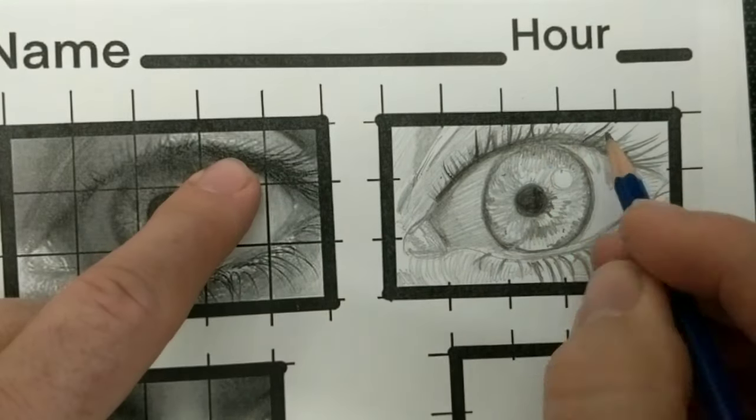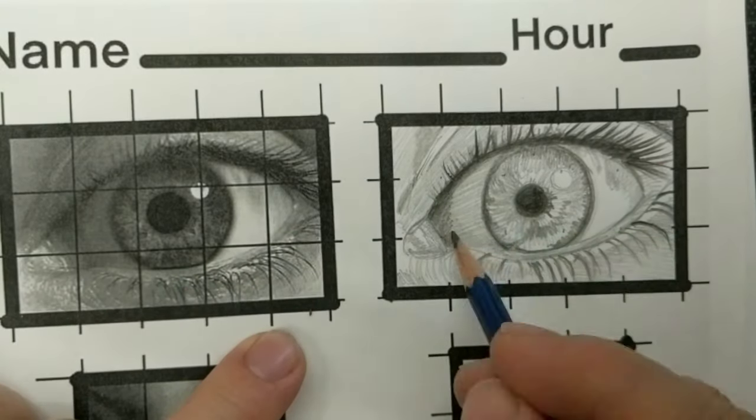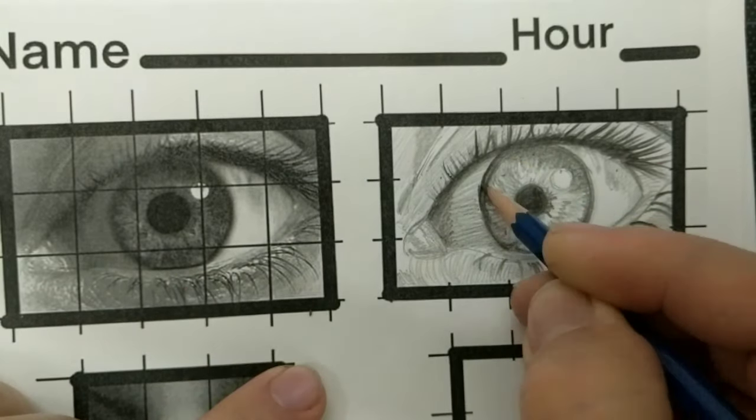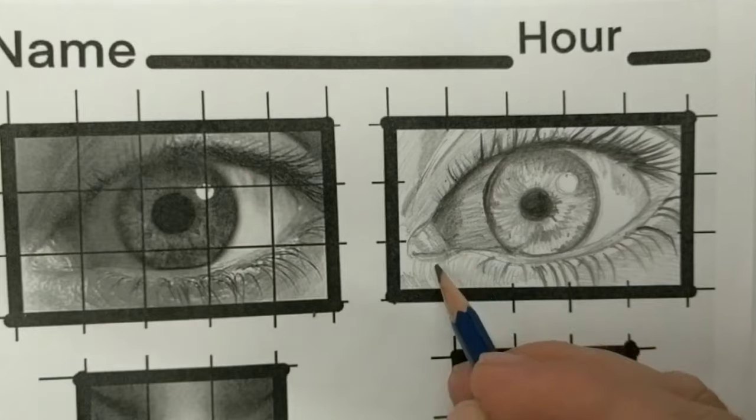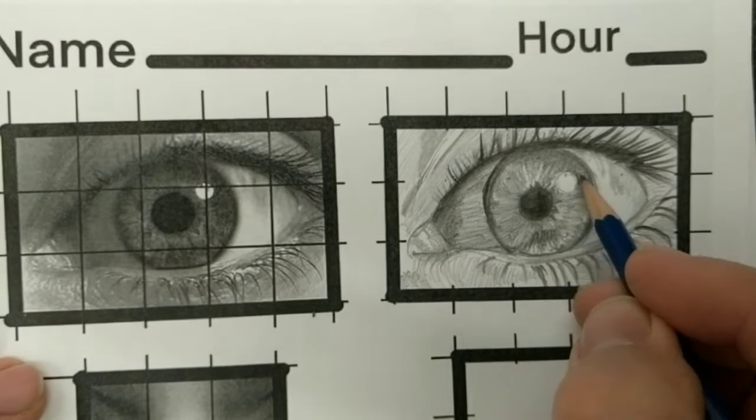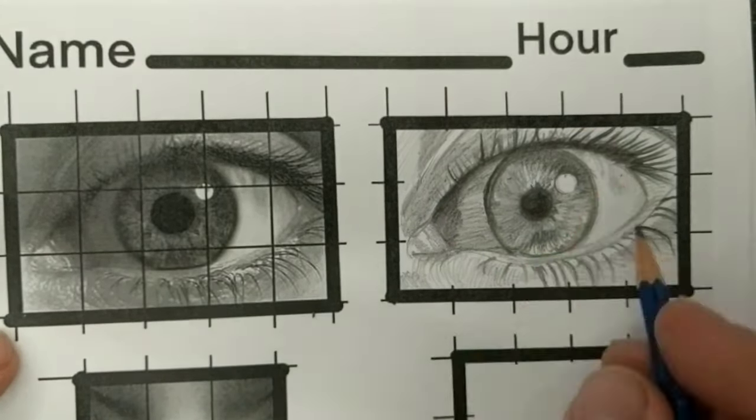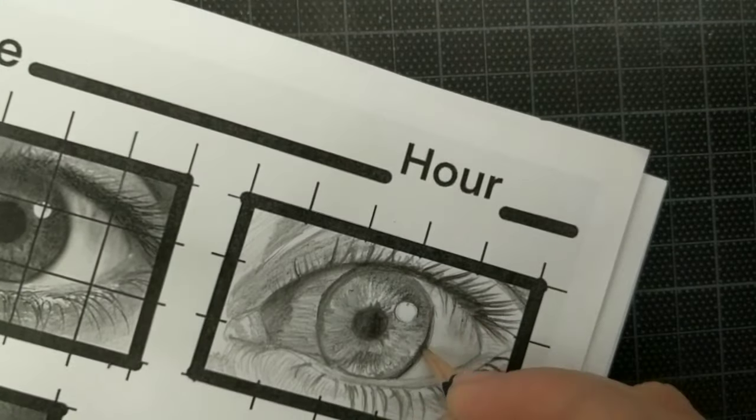Something else to point out here while we're on the eye is the use of white. If you'll notice, I am completely covering all of the white in this picture, in this little rectangle, because in real life there is no white.